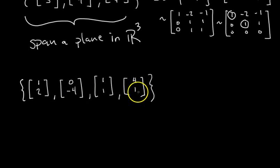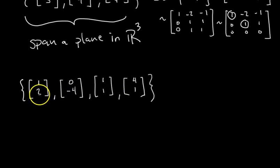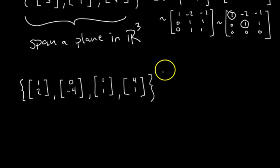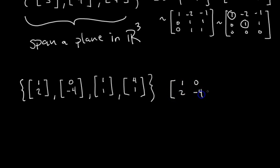Now we're looking at a set of four vectors all in R². Before applying the technique, let's get a sense of what answers we might expect. The biggest span we could get is R² itself. We could also span a line in R², or a single point — but that would only happen if all vectors were the zero vector. So we're most likely going to get either a line in R² or all of R². If we get two pivots, it spans R²; one pivot means a line.